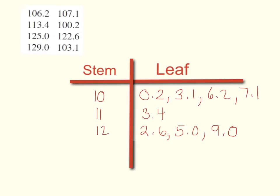And then finally, I have quite a few numbers between 120 and 130, so my lowest one is 122.6, stem is 12, leaf is 2.6. Next one, 125, stem is 12, leaf is 5.0.